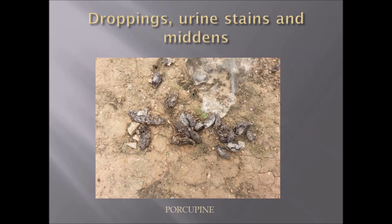Porcupines have lozenge or sausage-shaped droppings with points at either end and usually contain vegetable fibres, because porcupines feed on roots and other vegetation.